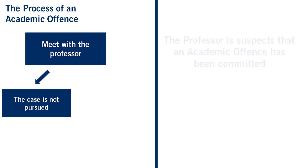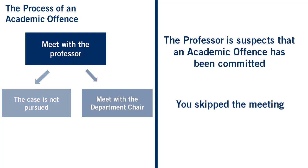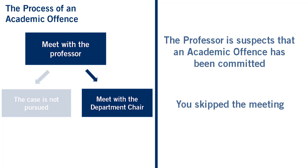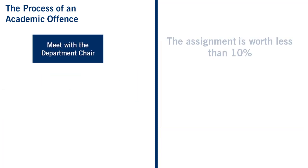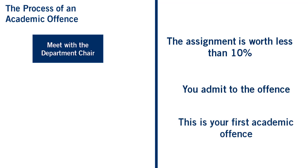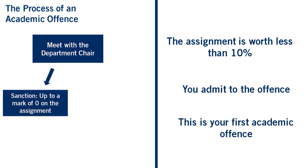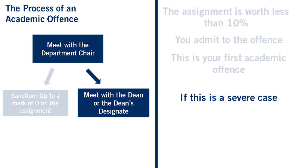If the professor suspects that an academic offense has been committed, or if you skip the meeting, your case will be forwarded to the department chair. Your professor cannot assign a penalty for an academic offense. If the assignment is worth 10% or less, you admit to committing an offense, and it is your first academic offense, the department chair can assign a sanction up to a mark of zero for the assignment in question.